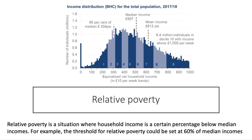Relative poverty is a measure of inequality. People are in relative poverty if their income in a given year is below 60% of median income. So median income in 2017 in the UK was £507 per week, and 60% of that is £304. So people in the bottom areas — basically areas one and two — fall into the relative poverty zone.